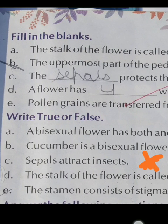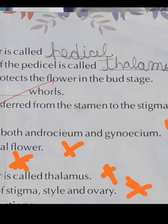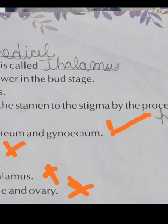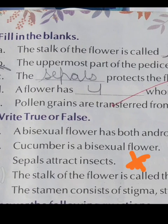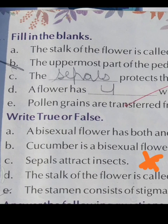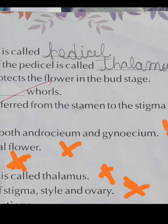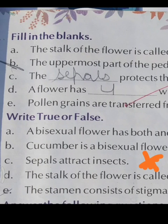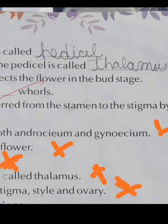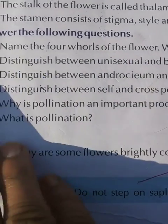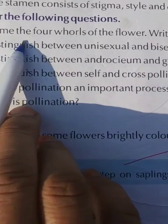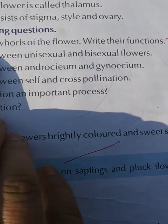True or False. A: a bisexual flower has both androecium and gynoecium — True. B: cucumber is a bisexual flower — False. C: sepals attract insects — False. D: the stalk of the flower is called thalamus — False. E: the stamens consist of stigma, style, and ovary — False.